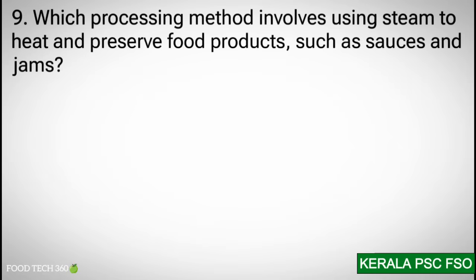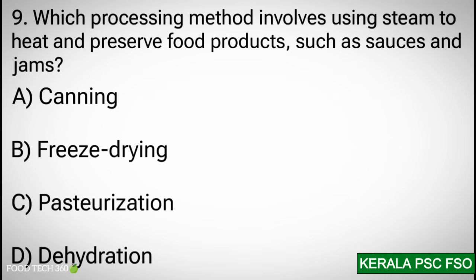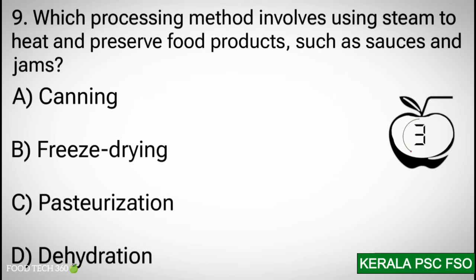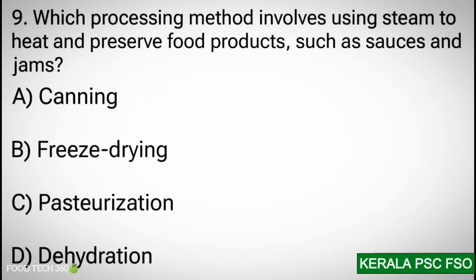Question 9: Which processing method involves using steam to heat and preserve food products such as sauces and jams? Options: a) canning, b) freeze drying, c) pasteurization, d) dehydration. Correct answer: a) canning.